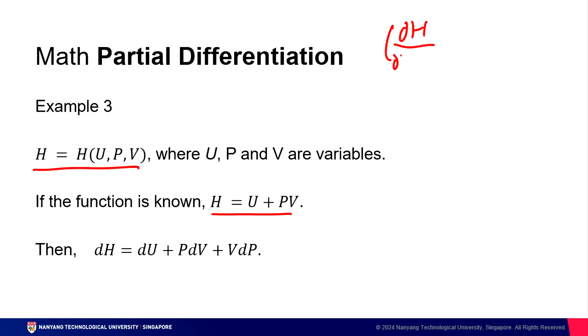But what happens when you do partial H over partial V, keeping U and P constant? The answer to that is actually P. Conversely, if you've got partial H over partial P, keeping U and V constant, the answer to that is V. Hence, the expression can be written as DH equals DU plus PDV plus VDP.